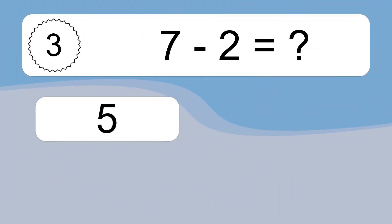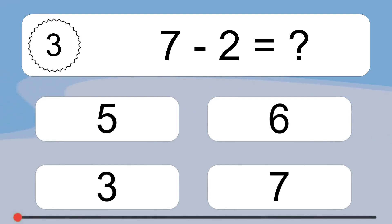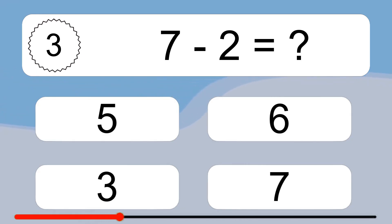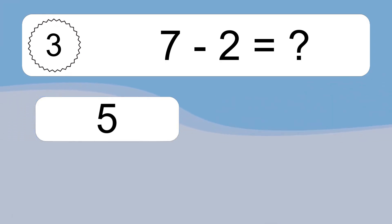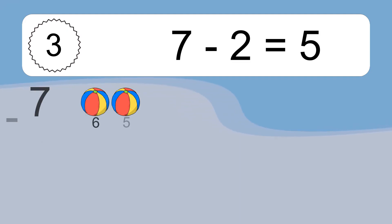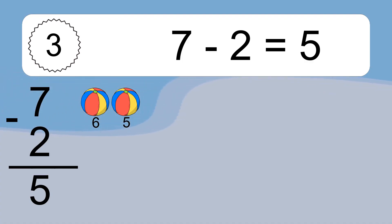7 minus 2 equals what? 7 minus 2 equals 5. Let's count it: 6, 5.